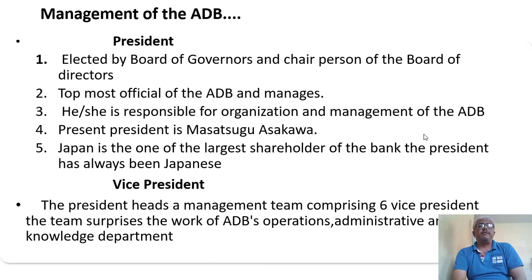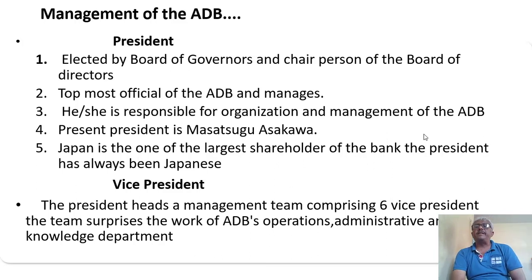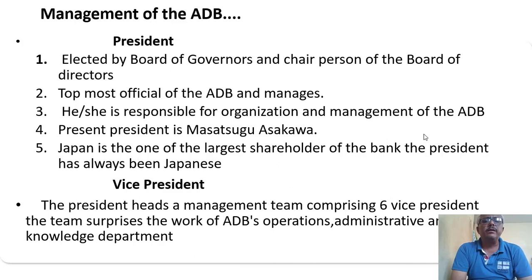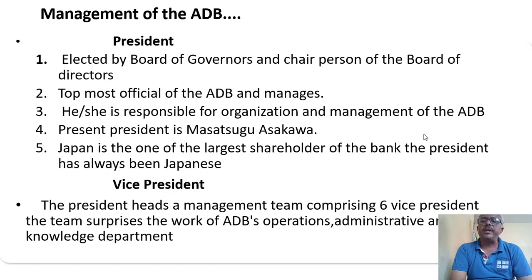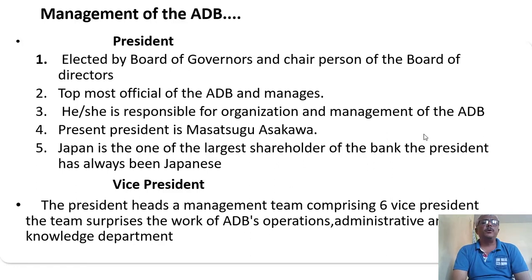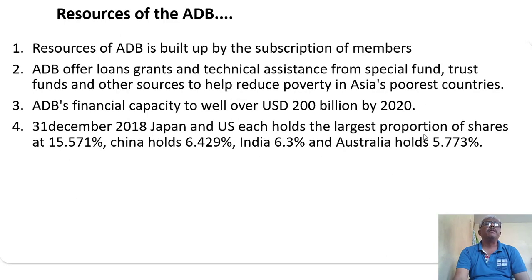The President heads a management team comprising six Vice Presidents. The team supervises the work of ADB across operations, administrative, and knowledge departments.